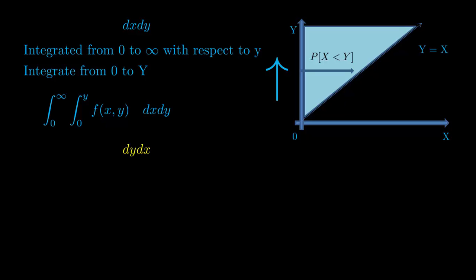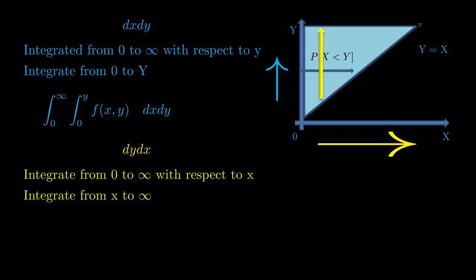In case you were integrating for dy dx, you'd be integrating from 0 to infinity with respect to x, and then from the function to infinity with respect to y. So that's from 0 to infinity, x to infinity, f of x y dy dx.